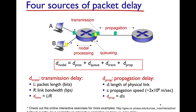Transmission delay is the time it takes the endpoint to encode the bits of that particular packet for transport down the communication line. The four sources of delay as they pertain to a packet switch are collectively called the nodal delay. It is the sum of four factors: processing delay, queuing delay, transmission delay, and propagation delay.